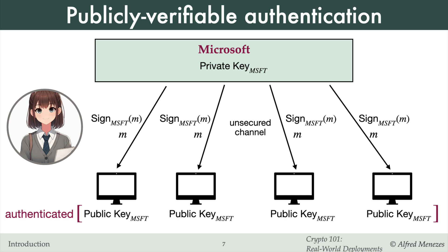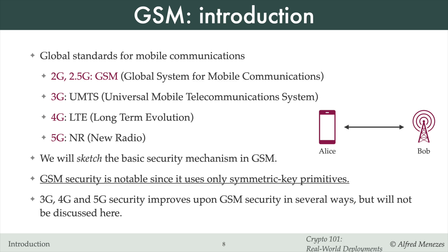Next, we'll provide brief overviews of how key establishment is handled in two large-scale cryptographic deployments: GSM for cell phone communications and digital rights management in the Sony PlayStation. The first example is GSM, or Global System for Mobile Communications, implemented in 2G and 2.5G networks. The fundamental security mechanism in GSM serves as a foundation for security protocols in 3G, 4G, and 5G. Notably, GSM security relies exclusively on symmetric key cryptographic primitives, without using public key cryptography.